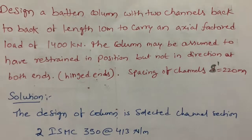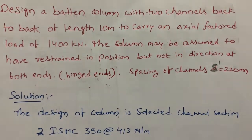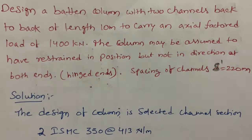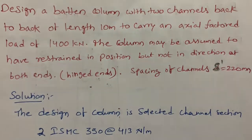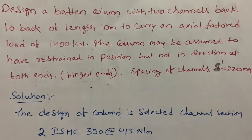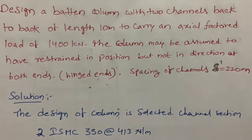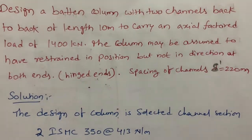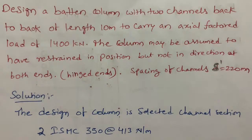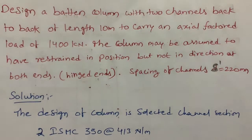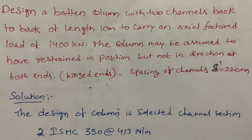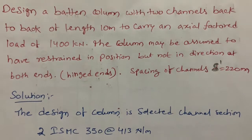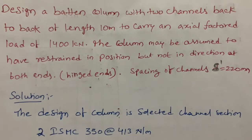In this video, I'll show you about batten column design with a solid example problem. Two channels are placed back to back, and we need to design a batten column using bolting to connect the batten plates. Both ends are hinged, the axial factored load is 1400 kilonewtons, and the spacing between the channels is 220 mm.